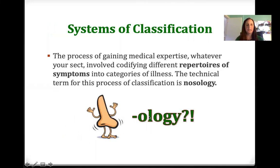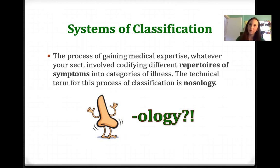Systems of classification. The process of gaining medical expertise, whatever your sect, involved codifying different repertoires of symptoms into categories of illness. By repertoires of symptoms, I mean symptoms that come together. So if you just have a runny nose, you're not going to think it's a cold or flu — you'll just assume it's allergies unless you also have aches and pains, a fever, or mucus of a certain color. You're looking for symptoms that all come together in order to create the way that we understand a disease.